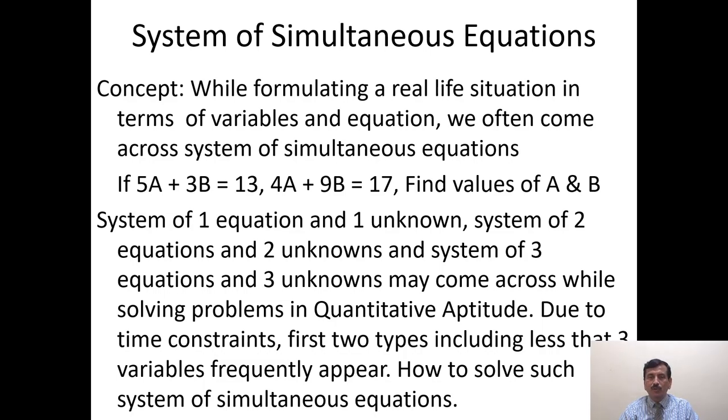Systems of one equation and one unknown, two equations and two unknowns, three equations and three unknowns, and so on may come across while solving problems in quantitative aptitude. Due to time constraints, the first two types including less than three variables frequently appear. How to solve such systems of simultaneous equations is what we are going to see.